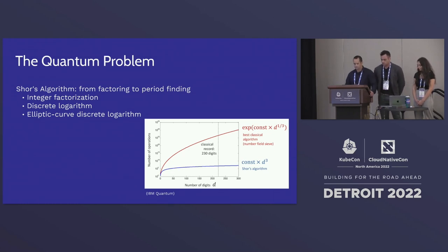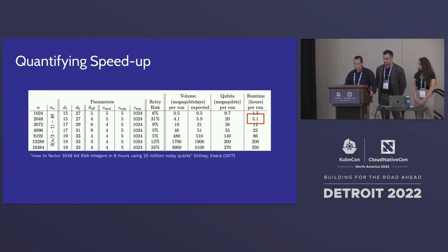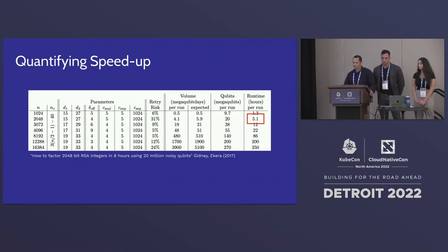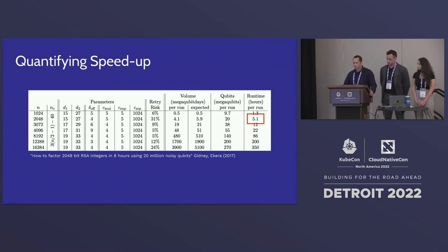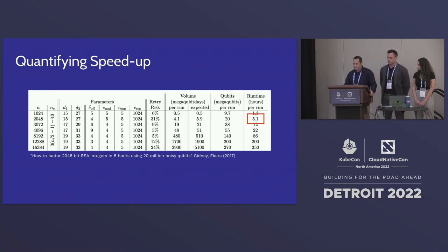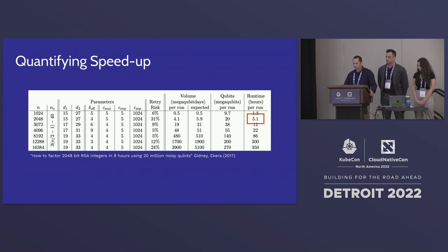Shor's algorithm can break RSA and the Diffie-Hellman key exchange — cryptosystems that rely on the private key being undiscoverable by brute force. Based on continued research by Gidney et al., a 2048-bit RSA encryption can be broken in approximately five hours using a quantum computer. Considering RSA is considered computationally intractable for classical computers, this is truly unbelievable. As computational methods improve and quantum computers grow more powerful, this is becoming closer to reality. This means we must change the mathematical problems at the core of modern cryptography, and a new family of cryptographic algorithms must be used.